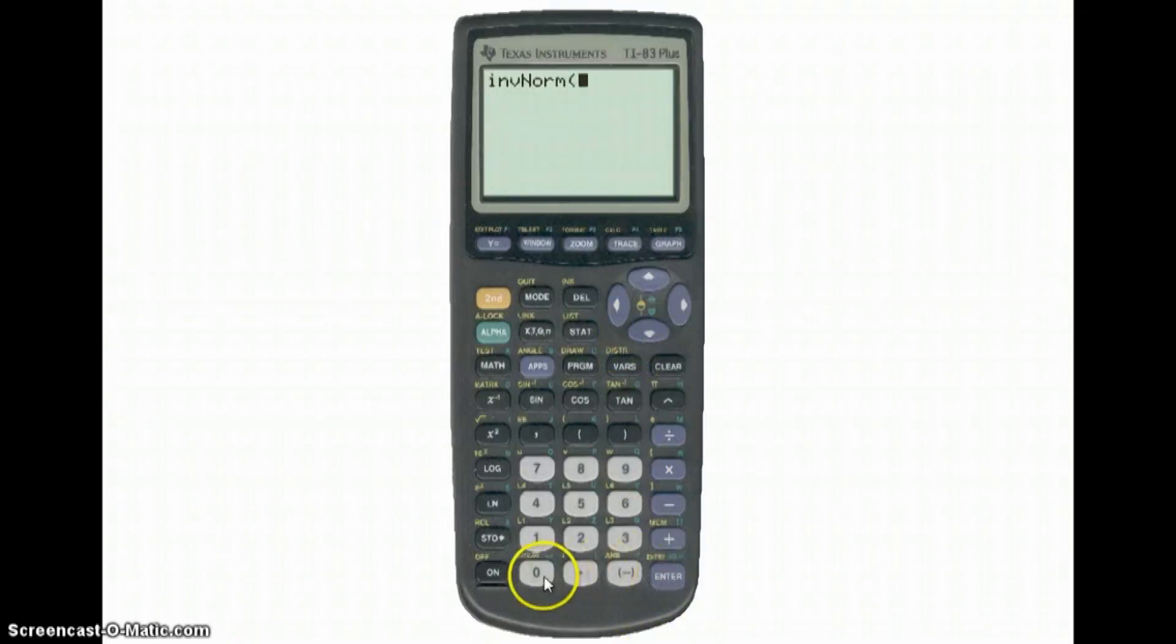We want the inverse norm of 0.03. So 0.03, close the bracket, press enter. And there we have our z statistic: minus 1.88079361. That's our value of z.